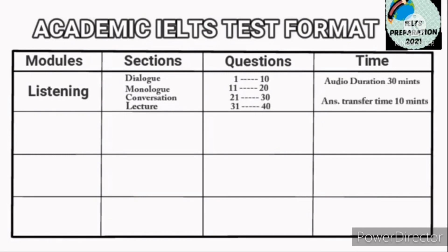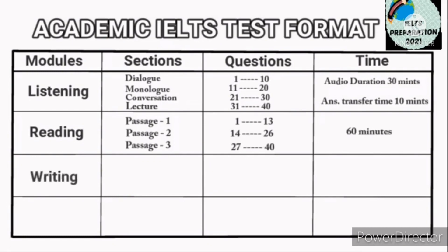The next module is reading. In reading, there are three passages: passage 1, passage 2, and passage 3. Passage 1 contains questions 1 to 13, passage 2 contains 14 to 26, and passage 3 contains 27 to 40. The time for reading is 60 minutes.